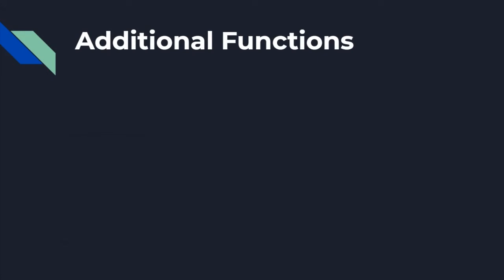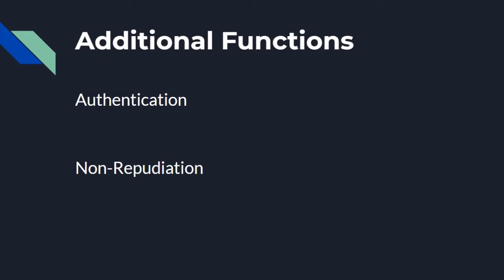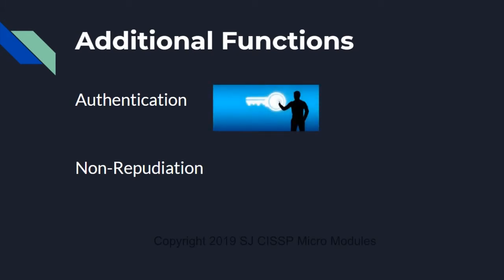Some additional functions that information security controls provide are authentication and non-repudiation. Authentication refers to making sure that the individual or entity is who they say they are. Non-repudiation means the inability to deny that you did something or sent something. Security controls aim to provide these, but they are not actually tenets or goals of information security — they are functionalities of information security controls.